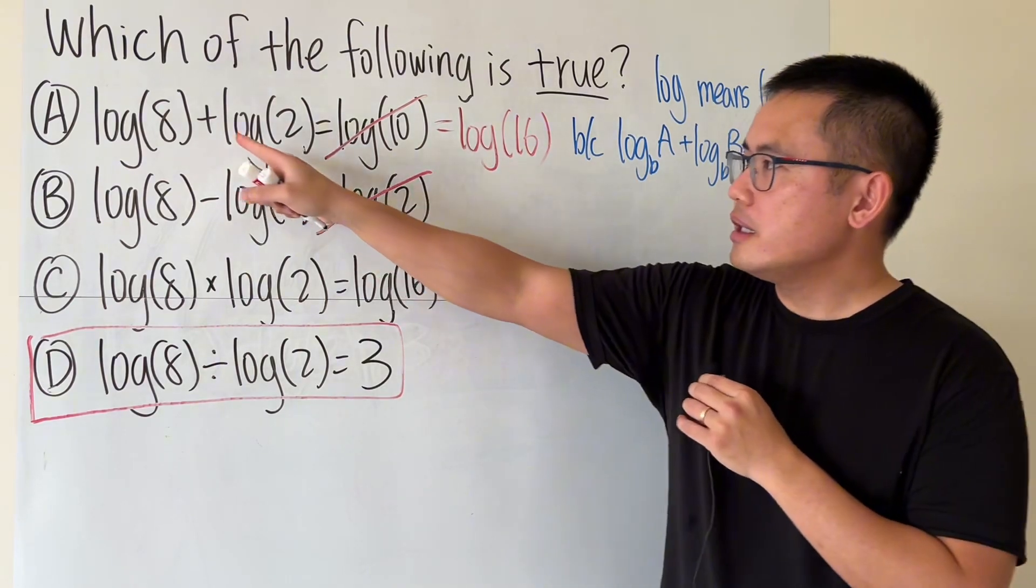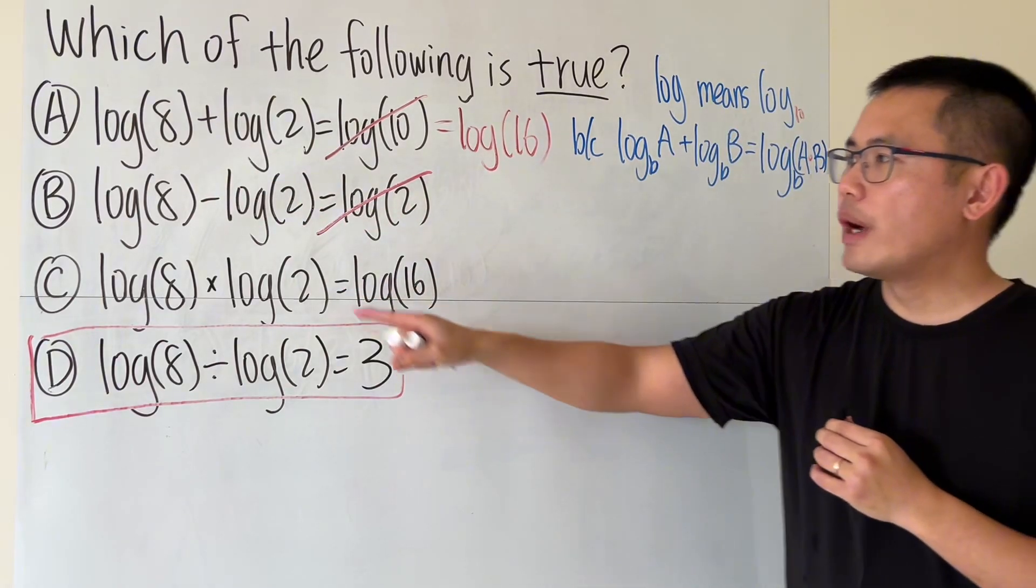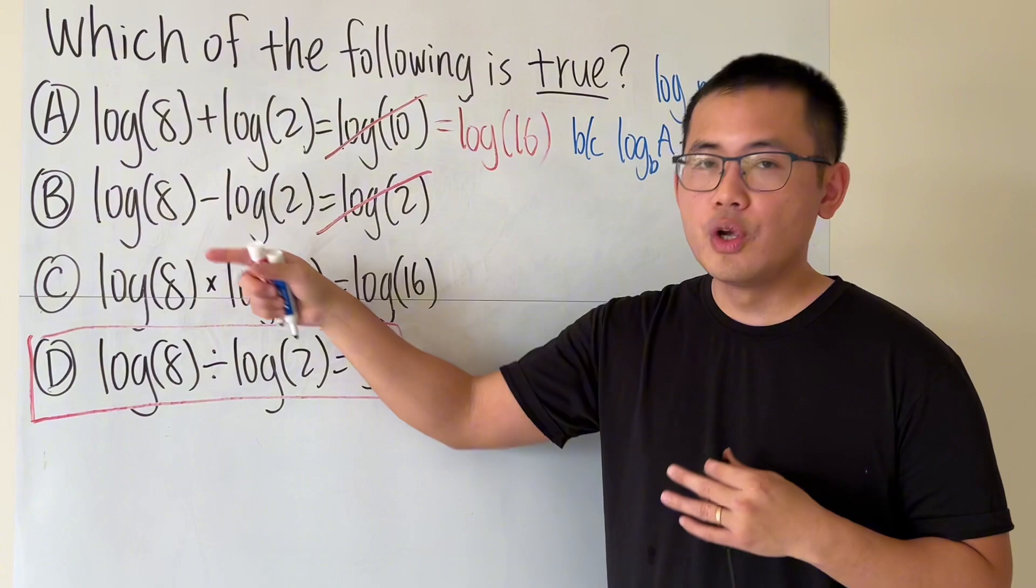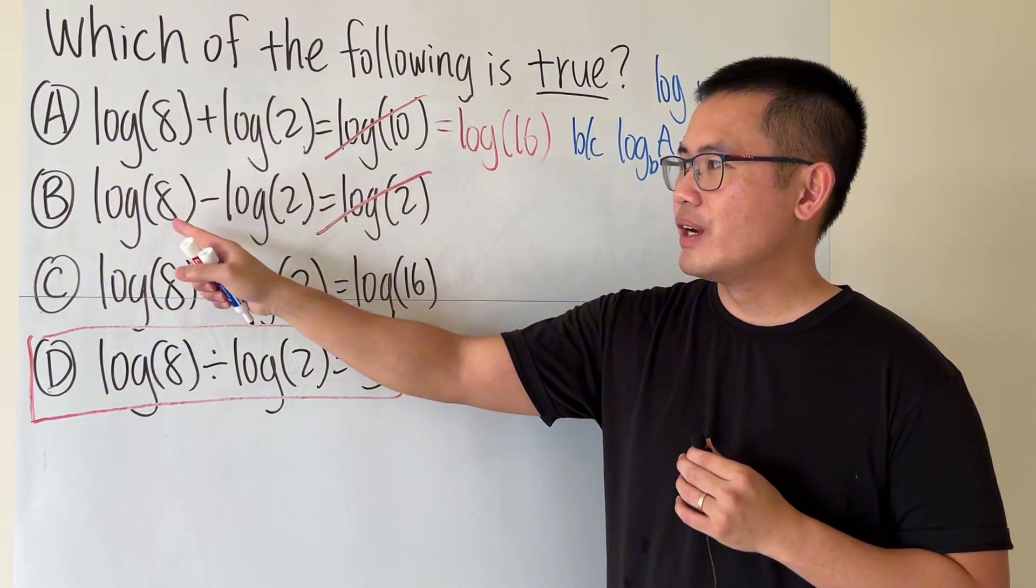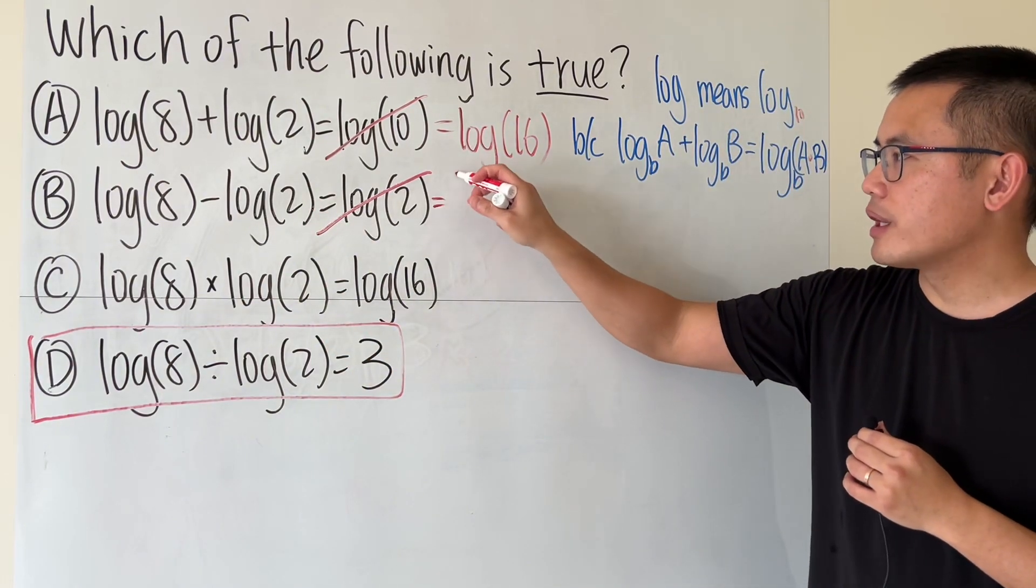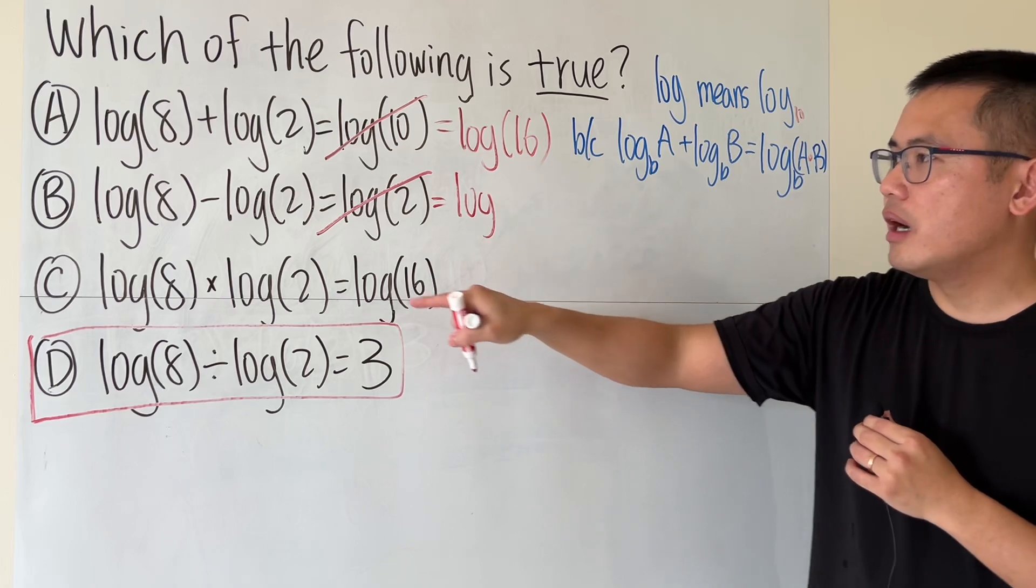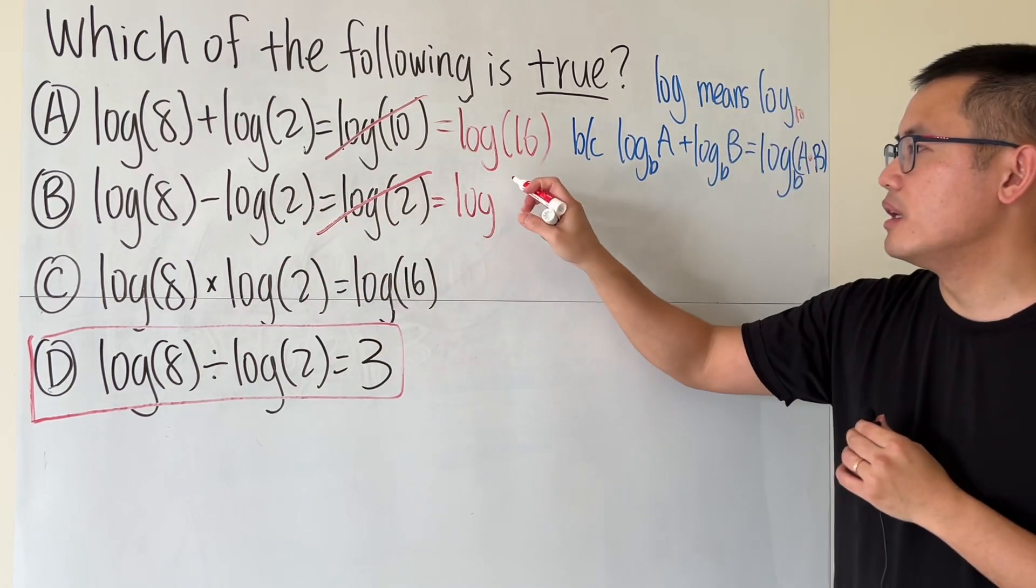Here is the correct way to do it. Just like earlier when we have an addition inside we multiply. When we have a subtraction, which is the opposite of addition, we will take this divide it by that. So the correct answer for this is should be log of 8 divided by 2 which is 4.